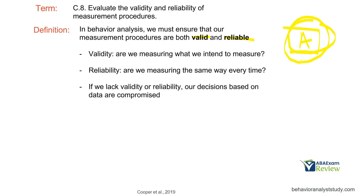A good definition is going to let us measure this behavior over and over. And then reliable — are we measuring the same way every time? What you'll find a lot of times with technicians, if you're not observing or supervising them enough, is they'll start to make small modifications — whether through drift or maybe intentionally — to how they're measuring because they believe it might help data. You as the analyst are the one choosing how that measurement should be collected, and reliability means even if you have the same plan in place for five years and haven't changed anything, that plan needs to be the same all five years. If we lack either validity or reliability, our decisions based on data are compromised because the data are going to be worse.